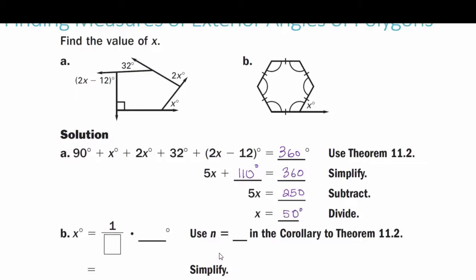Part B: this is a regular polygon, meaning all sides and all angles are congruent, so all exterior angles are congruent as well. To find the measure of each exterior angle, I divide 360 by the total number of sides, which is 6. 360 divided by 6 is 60 degrees. So each exterior angle of this regular hexagon is 60 degrees.